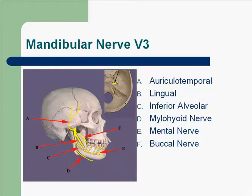Here are the branches we will be talking about: the auriculotemporal, the lingual, the inferior alveolar (also known as the IA), the mylohyoid nerve, the mental nerve, and the buccal nerve.